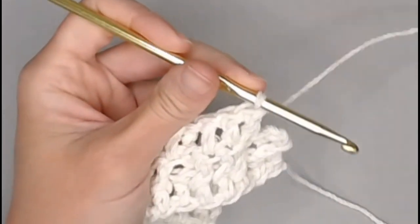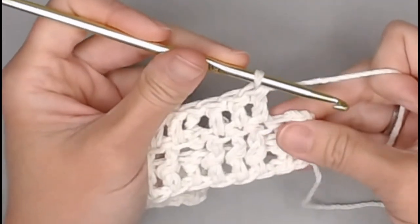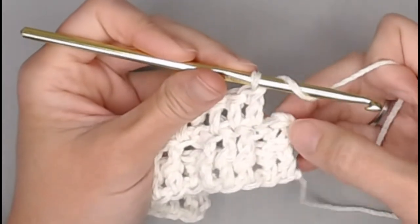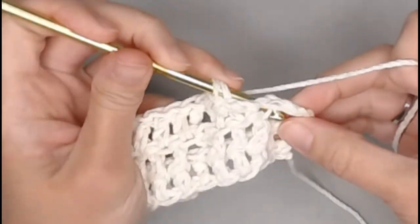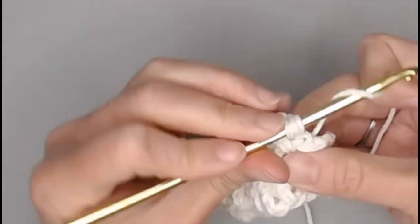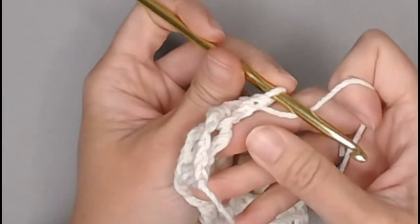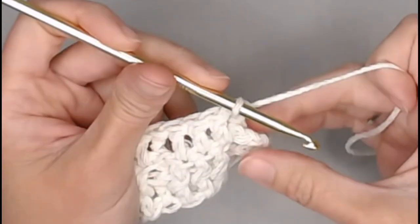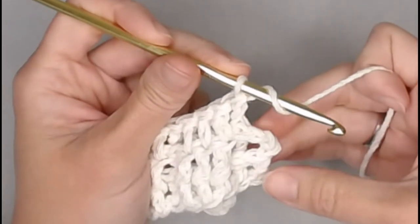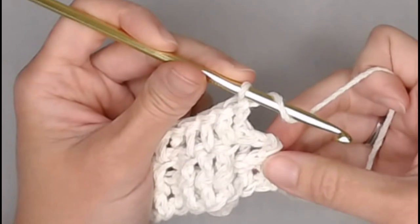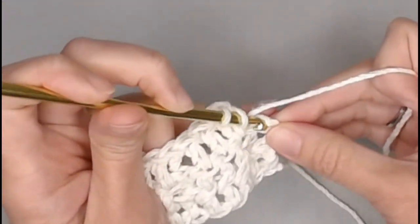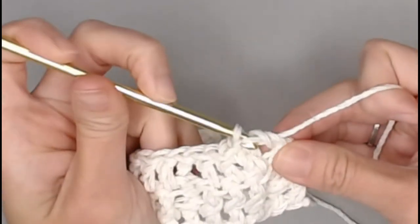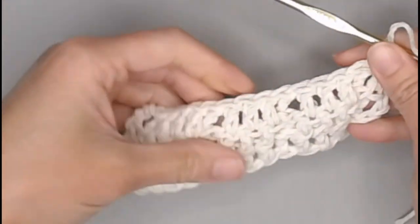And when you reach the very end of row three, the last two stitches here, you will back post double crochet around the front post double crochet of the previous row. And you will end with a regular double crochet in the third chain to close row three.